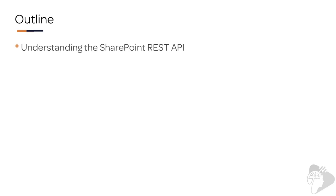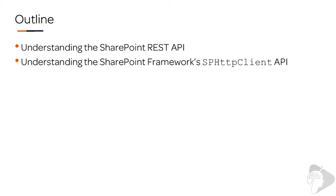So what are we going to cover in this chapter? We'll first briefly look at the SharePoint REST API for those of you who aren't very familiar with it. Feel free to jump ahead of this section if you're very familiar with the SharePoint REST API and just need to see how to work with it using the SharePoint Framework. Then we're going to look at the SP HTTP client, an object that the SharePoint Framework API provides that we can use to call the REST API.